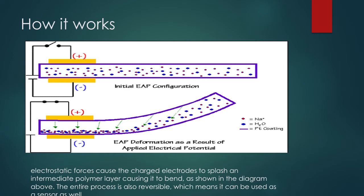Electrostatic forces cause the charged electrodes to splash an intermediate polymer layer, causing it to bend, as shown in the diagram above. The entire process is also reversible, which means it can be used as a sensor as well to show the deformation. In other words, it shows how much force has been acted while stretching it.